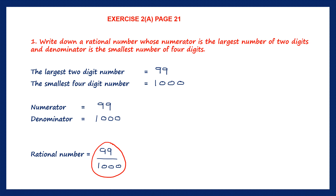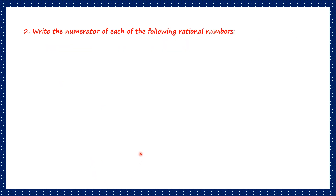Here you can see the rational number 99 by 1,000. The denominator is not 0, so this is a rational number.